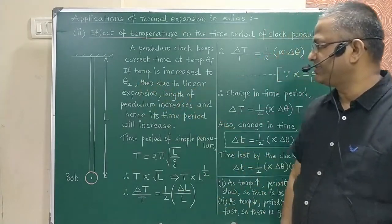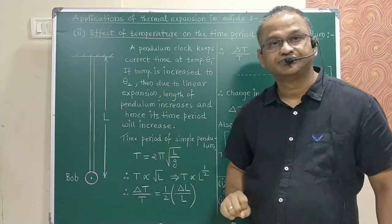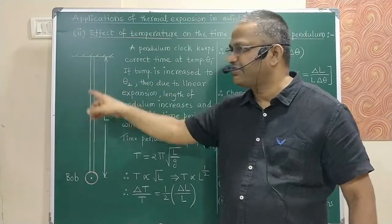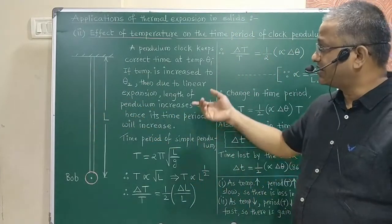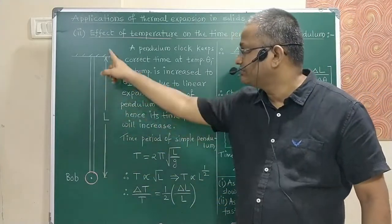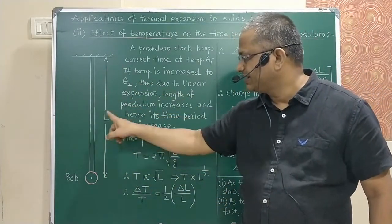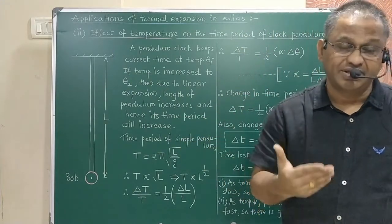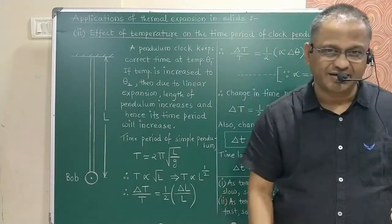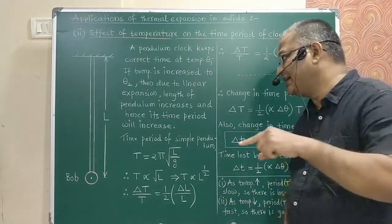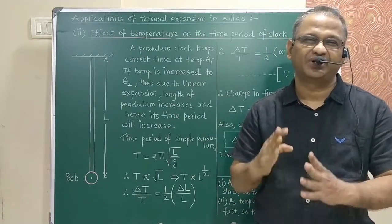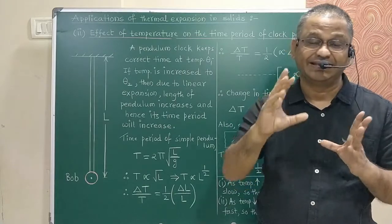Because of the rise in temperature, there will be linear expansion of the metal rod. As temperature increases, the rod expands, so the length of the pendulum increases. The time period of a simple pendulum is directly proportional to the square root of its length, given by the formula T = 2π√(L/g), where L is the length and g is acceleration due to gravity.